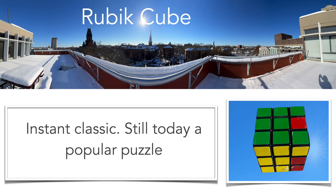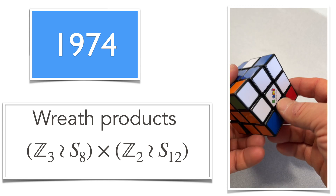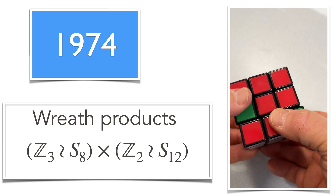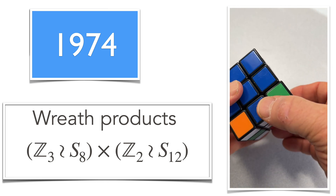The Rubik's Cube is definitely the most famous puzzle by far — it outpaced any other puzzle in the market very quickly. It's still played today, found about 100 years after the 15 puzzle hit the market, and it's still used in competitions. Mathematically, it's a wreath product, and it can also be written as semi-direct products. A very iconic puzzle.